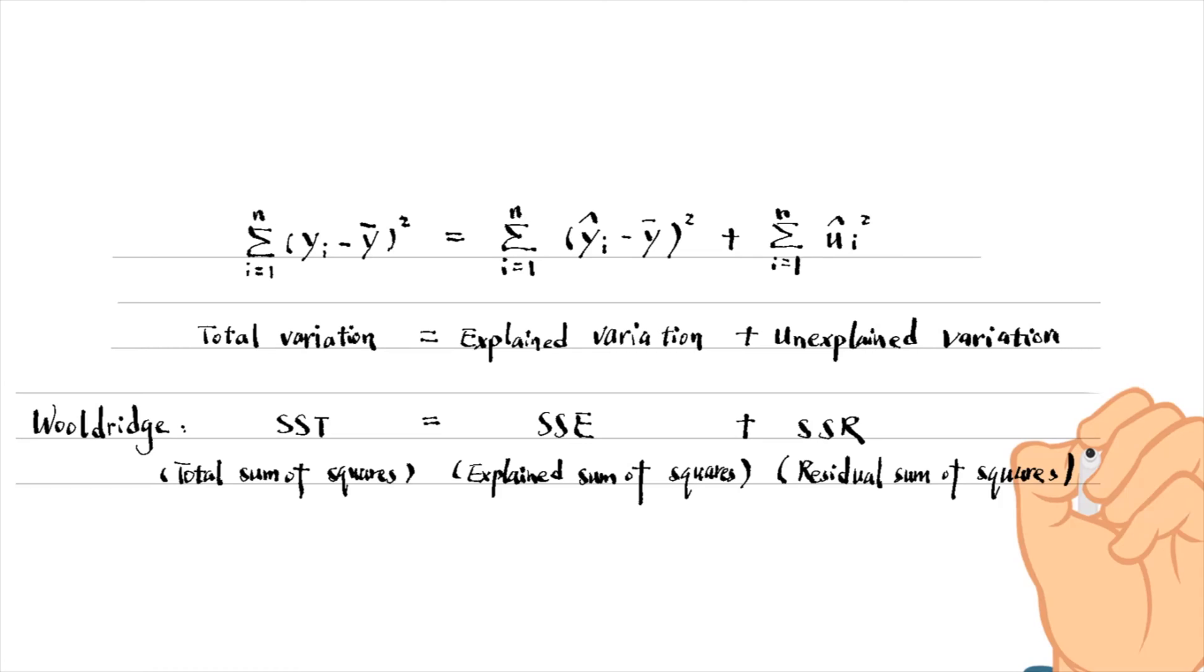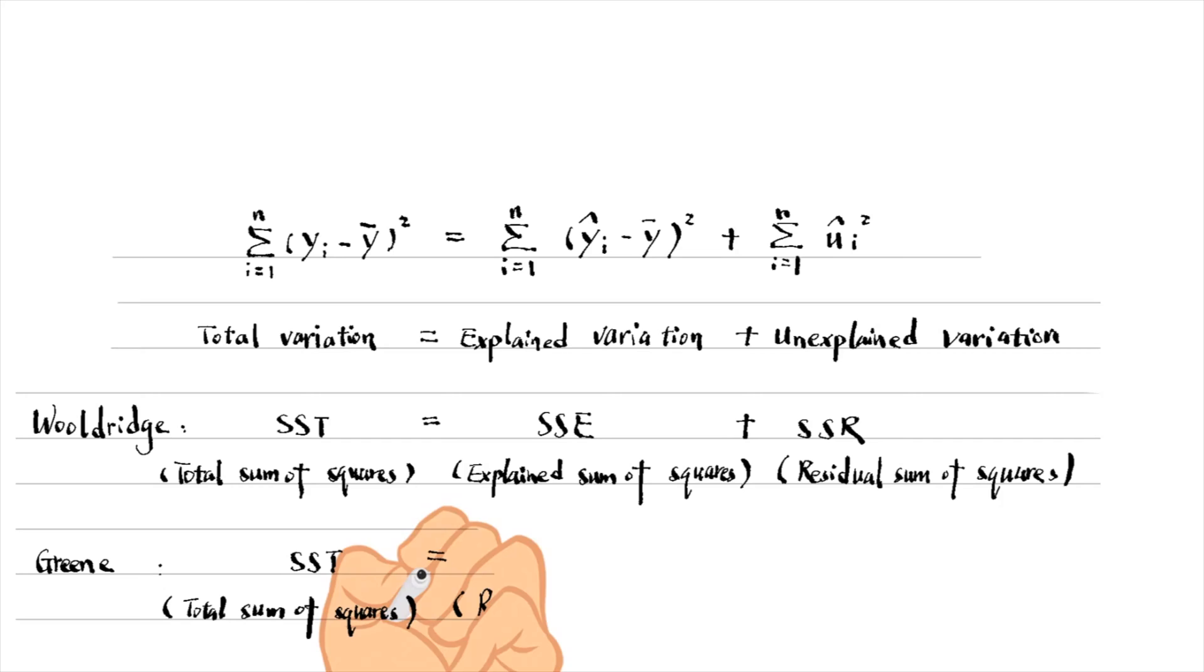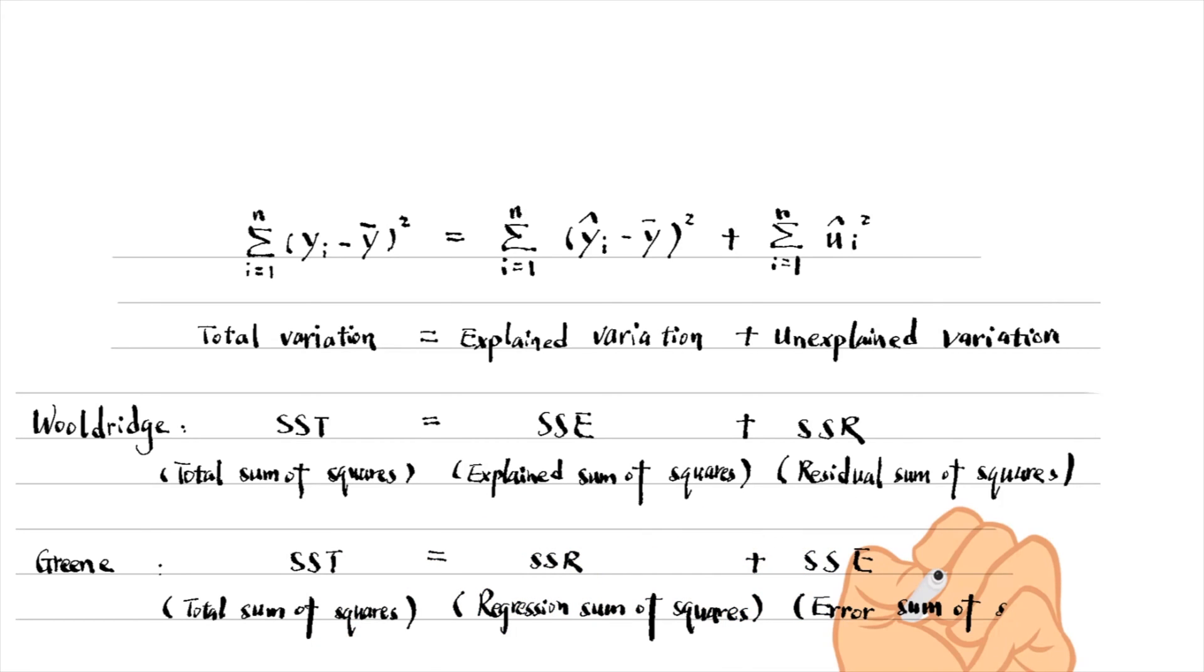Another popular textbook, Econometric Analysis, the eighth edition by Professor William Greene, uses the regression sum of squares SSR to name the explained variation and the error sum of squares SSE to name the unexplained variation.